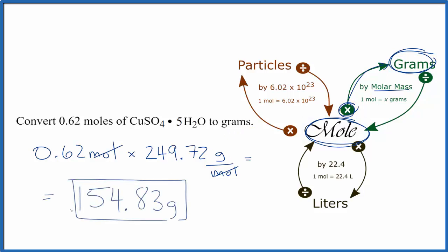That gives us 154.83 grams of copper 2 sulfate pentahydrate. So again, we had our moles, we multiplied by the molar mass to convert that to grams, and we made sure that moles canceled out so we ended up with grams.